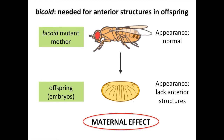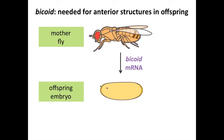Bicoid is an example of a maternal effect mutant. Some macromolecule that the mother normally contributes to the embryo from the cytoplasm of her eggs is missing. In the case of Bicoid, this macromolecule is needed for normal anterior development of the embryo. For Bicoid and some other maternal effect genes, the macromolecule that the mother contributes is the messenger RNA from the gene — the mRNA.